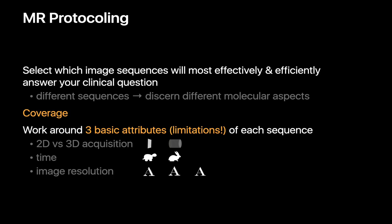Assembling these assortments of MR sequences to study a body part is called MR protocoling. Protocoling requires us to decide which combination of imaging sequences will answer our question as effectively and efficiently as possible, and how large a region of the body will be imaged. Our decisions will be influenced by three attributes of every sequence: is the acquisition two-dimensional or three-dimensional, how long does it take, and how good is the spatial resolution of the images it will generate?